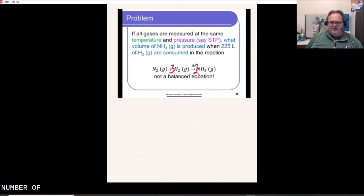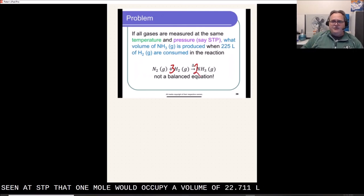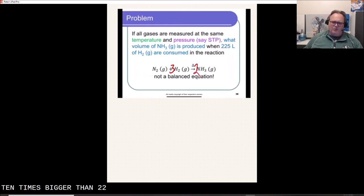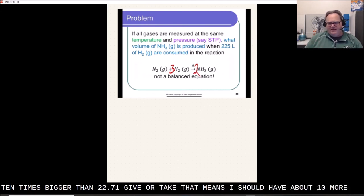Look, I could calculate the number of moles of H2 that are consumed. It's going to be approximately 10. Because, of course, we've seen at STP that one mole would occupy a volume of 22.711 liters. Here we've got 225 liters. That's 10 times bigger than 22.71, give or take. That means I should have about 10 moles there.